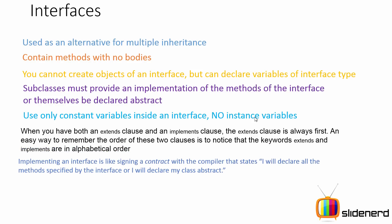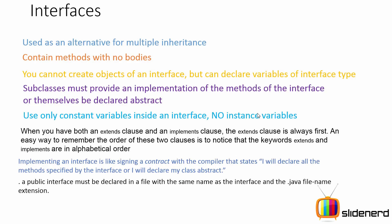Implementing an interface is like signing a contract with the compiler that says: I will declare and write the code for all the methods defined by the interface, otherwise I will make my class abstract. A public interface must be defined inside a file with the same name as the interface and the .java file extension — just like public classes in Java. The same rules and restrictions apply for public interfaces.